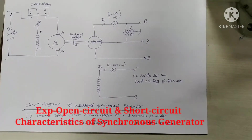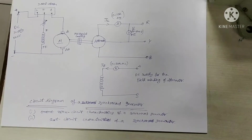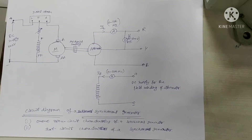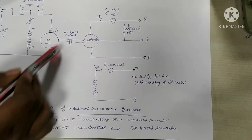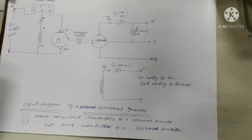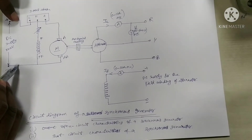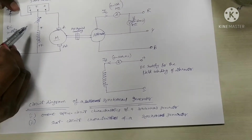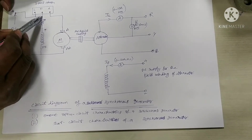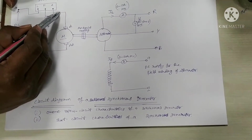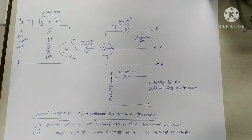Today we are going to conduct the open circuit characteristics and short circuit characteristics of a synchronous generator. This is the circuit diagram for today's experiment. If you observe this circuit, this part is a DC shunt motor part. We can connect a voltmeter across the supply voltage and a moving coil type ammeter in series with the field winding for measuring the field winding current, and another ammeter in series for measuring the armature current of the DC shunt motor.